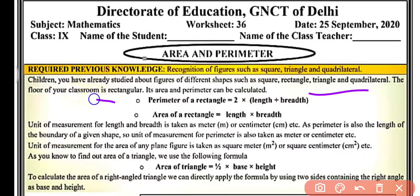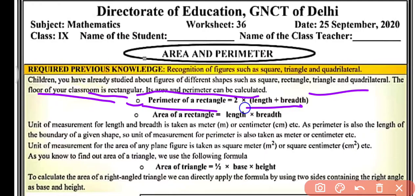The floor of your classroom is rectangular. So its area and perimeter can be calculated using the formula: perimeter of rectangle equals 2 into (length plus breadth). In your floor there are 2 lengths and 2 breadths, so adding them gives 2 common, that is 2 into (length plus breadth). And area of rectangle is length into breadth — multiply length by breadth to get the area of the floor.